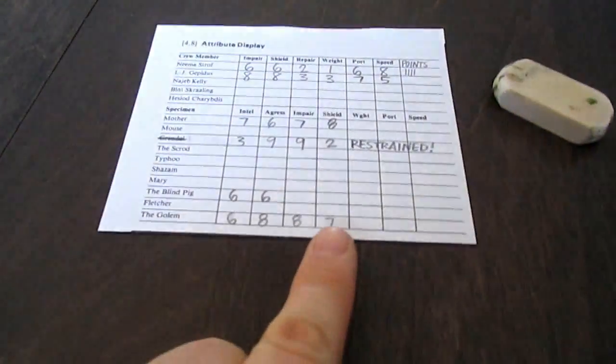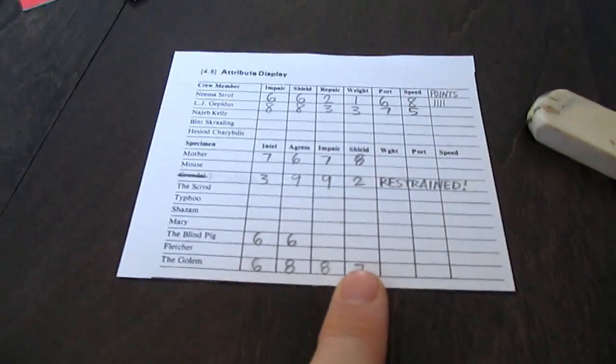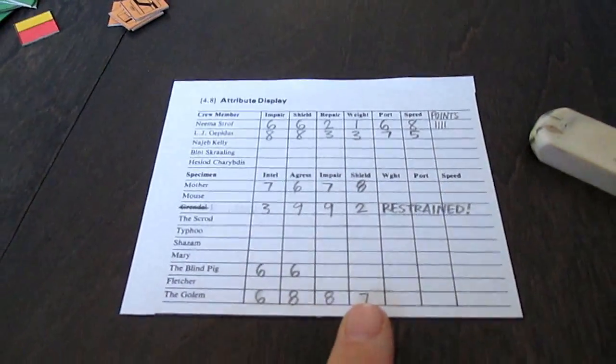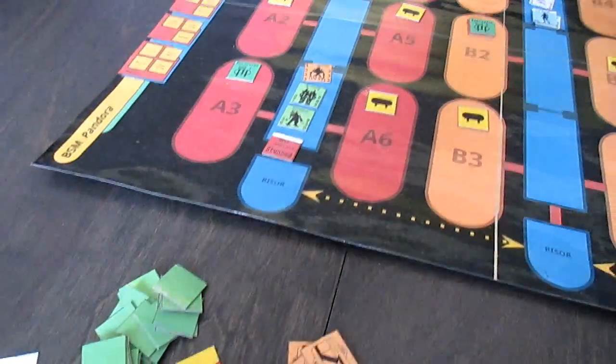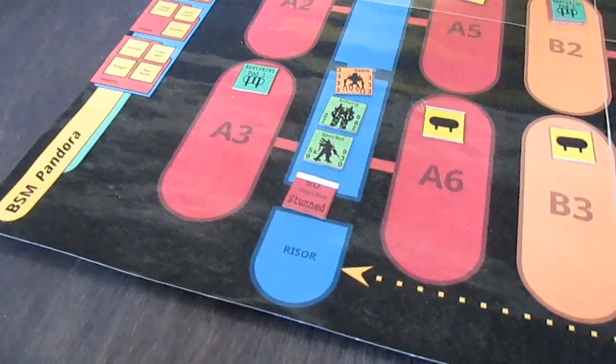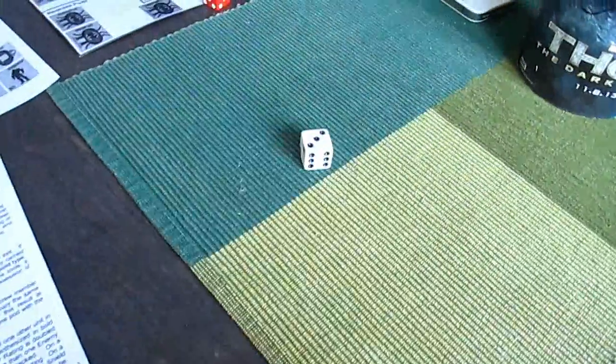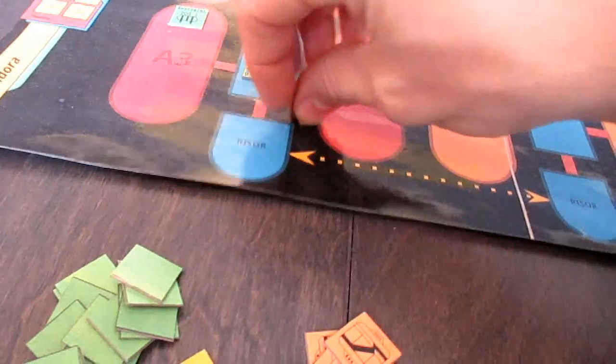The outcome of that was that he got stunned. Golem is still alive and wide awake and kicking and rearing for more. Because the golem is still in the fight stage, I'm going to roll to see if Jeopardous comes out of his stun. He's a four, so let's do that right now. It's a three, so he is now awake again.